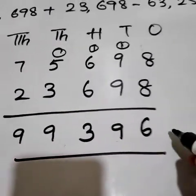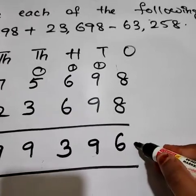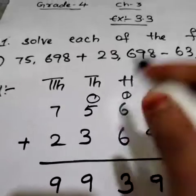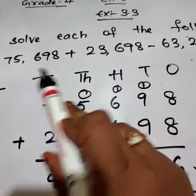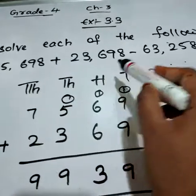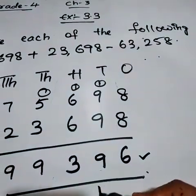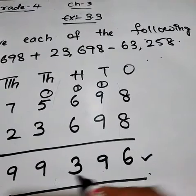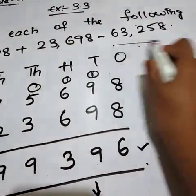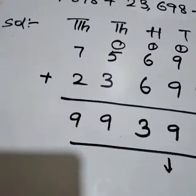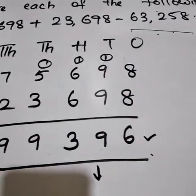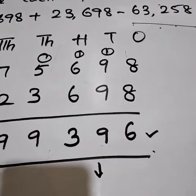So what we have to do? We have to subtract with this 63,258. Because in the starting question, firstly we have to add these 2 numbers. So we have added these 2 numbers. This is our difference, the result we got after adding these 2 numbers. So we have to subtract with this number.